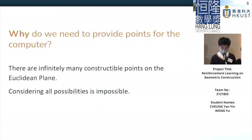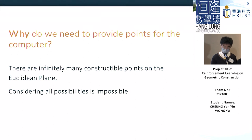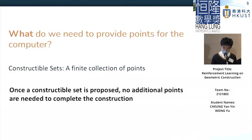Why do we need to provide points for the computer to operate upon when we just want it to conduct reinforcement learning to learn how to control points? It's because there are infinitely many points on the Euclidean plane, and it's not practical for the computer to handle all the points at once. So we have to provide a selected range of points in a set called the constructible set, which we define as a set that can be used to construct the task using only the points within it.